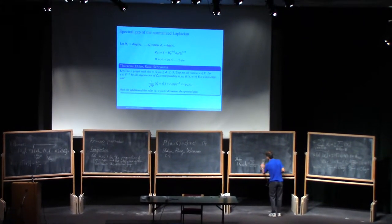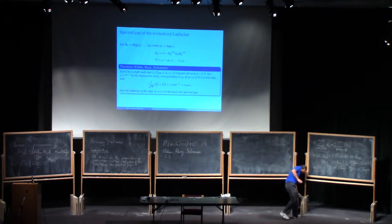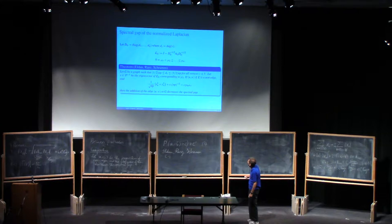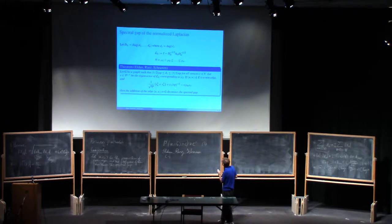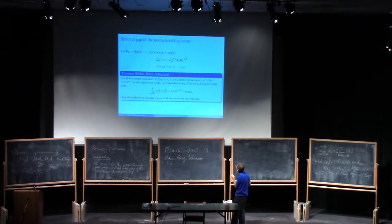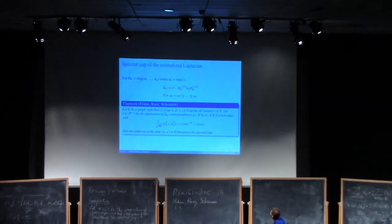The proof is a rather tedious but straightforward calculation: you write the definition of the second eigenvalue using the Rayleigh quotient, note the difference between the adjacency matrix of the graph and the graph with the added edge, know the first eigenvector of both, write the Rayleigh quotient, cancel what you can cancel, and you get the theorem of Eldan, Raz, and Schram. Now let's prove the result. As you see, this additional term is very small — if p is constant it's 1/n², and the coordinates are typically 1/√n, so this is 1/n, making it 1/n^{3/2} — so this term cannot do much harm.